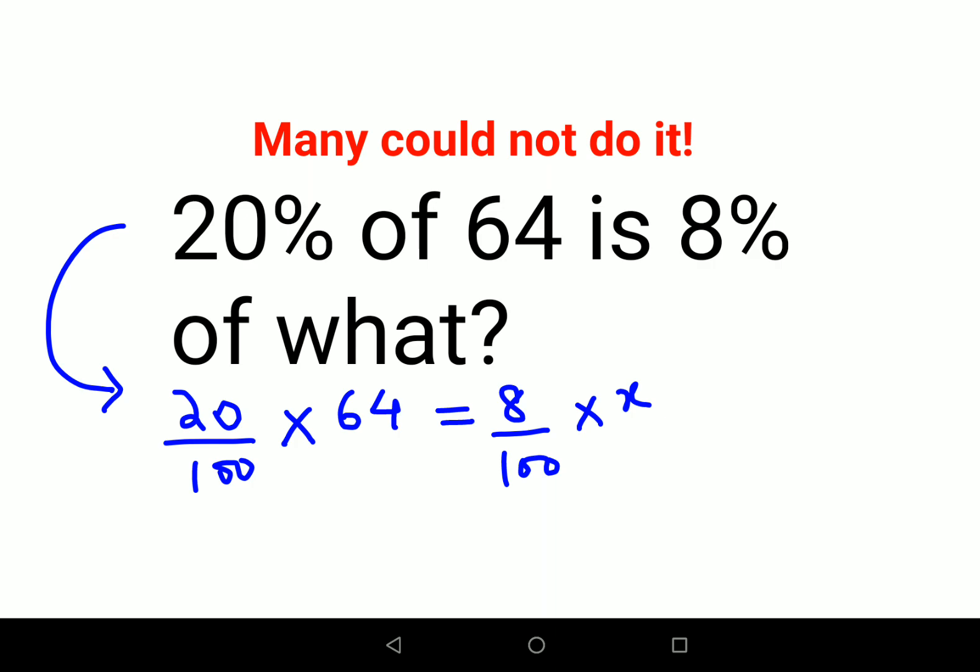Next what we can do is let's try to put all the numbers on one side. So therefore I can say x is nothing but 20 upon 100 into 64.